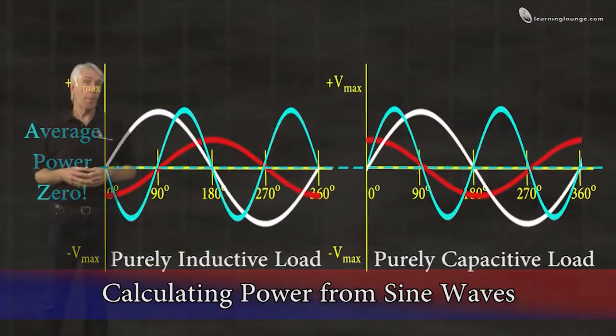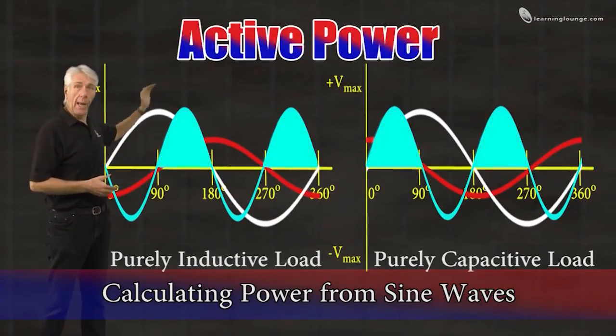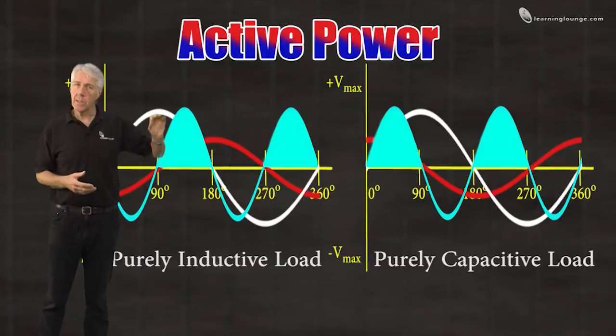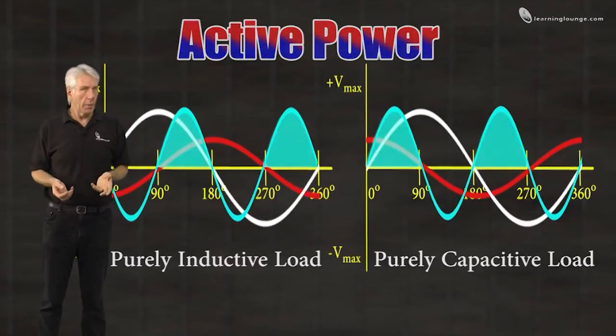The proportion of the peak power waveform which is positive is known as active power. This is essentially the real or true power that's used by the load to do the work it needs to do, be it a motor, a light or whatever.